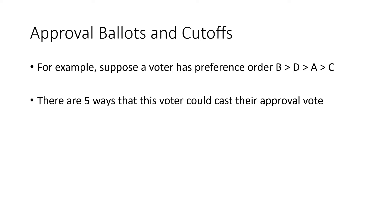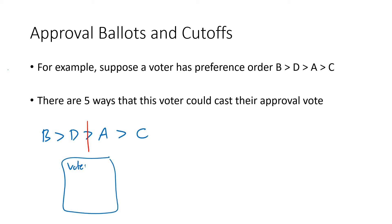For example, say we had a voter with preference order B first, D second, A third, and C last. One way this voter could cast their ballot is to draw the cutoff between D and A — approving B and D but not A and C. So on their ballot they'd check the box next to B and the box next to D, but leave A and C unchecked.